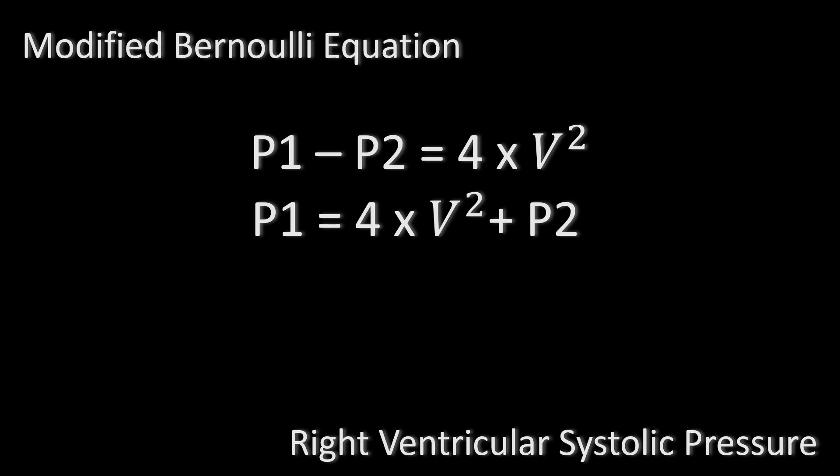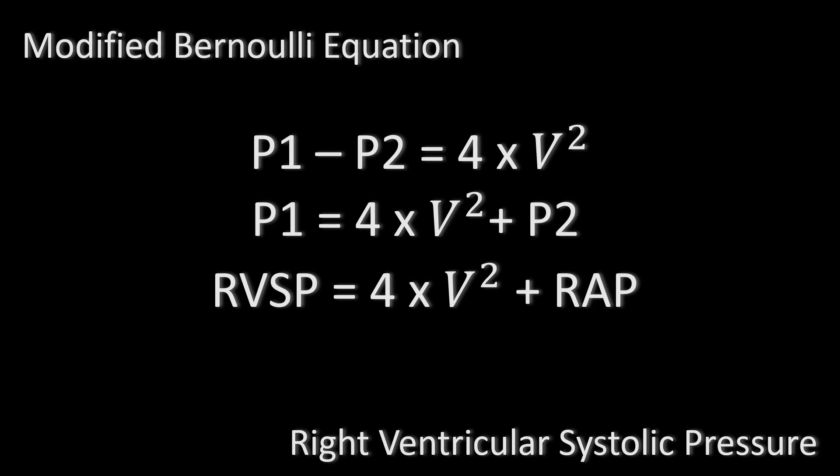The velocity we're now looking for is the tricuspid valve regurgitation jet velocity. So the equation becomes: right ventricular systolic pressure equals 4 times the peak tricuspid regurgitation jet velocity squared, plus the right atrial pressure. The right atrial pressure estimation was described in a previous video and I will put a link in the description if you would like to refresh your memory.